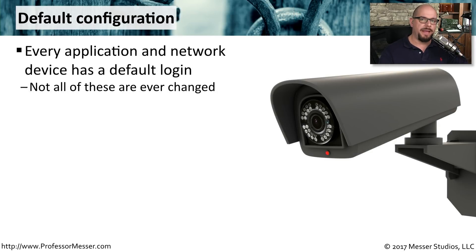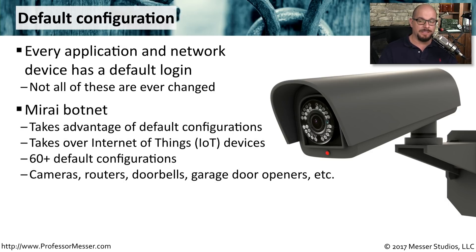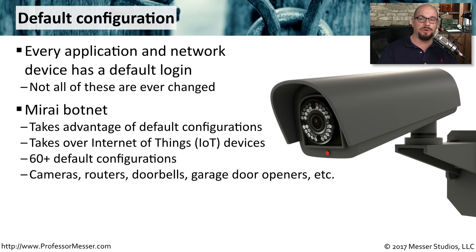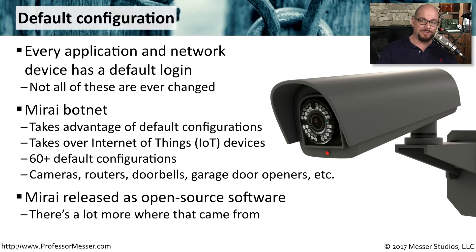Every device that you put on your network has a default username and a default password. Unfortunately, not everybody changes the defaults, and very often they remain available for anyone to use. A good example of someone who takes advantage of these defaults is the Mirai botnet. It checks all of these different Internet of Things devices and tries every possible default username and password combination. It knows of well over 60 different device configurations, ranging between cameras, routers, doorbells, garage door openers, and all of the other devices now connected to our networks. To make matters worse, the Mirai botnet was released as open source software, which allows anyone to grab it and customize it for their own purposes.